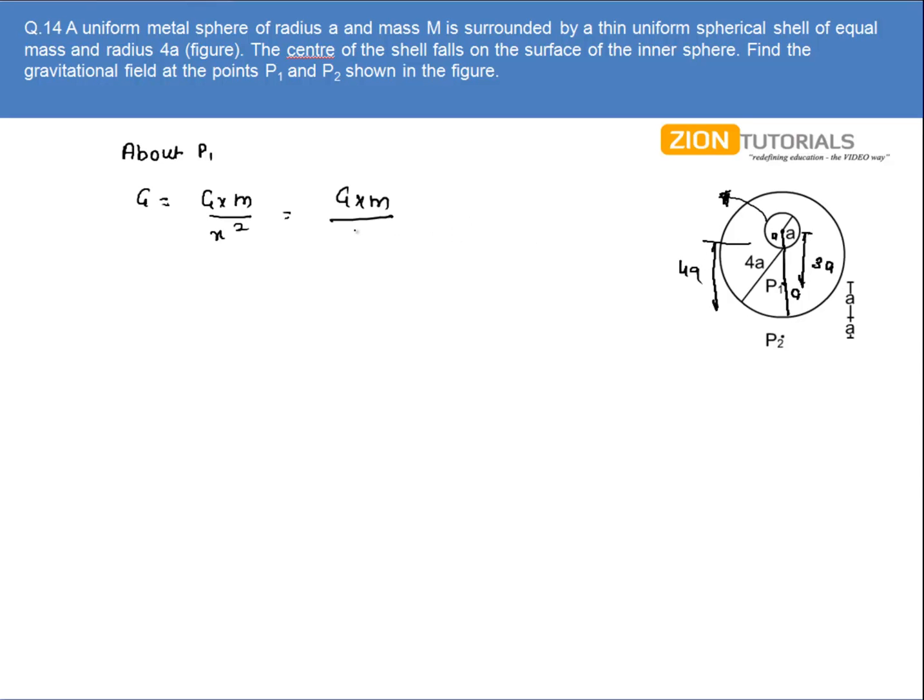So the distance between both of them is (a + 3a) whole squared. That is the distance between the center of the metal sphere and point P1. So Gm divided by 16a². That is the answer for the first part, at P1.